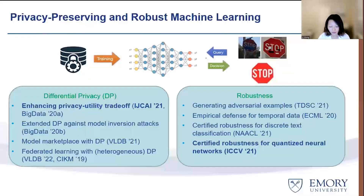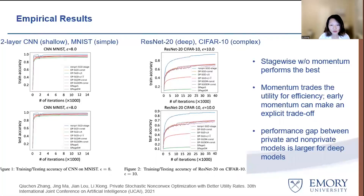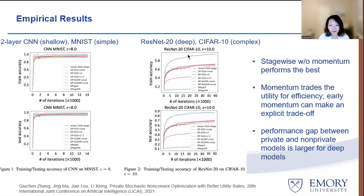Here are some results. The blue line is the non-private model as a reference — the model without any differential privacy guarantee. The few lines next to it are different variants of our approach. The red and green lines are the basic DP-SGD approaches with constant learning rate. We can see the stage-wise algorithm provides a big performance gain compared to the standard baseline DP-SGD approaches. On the other hand, there is still a big gap between the DP algorithms and the non-DP blue line, which means there is still a lot of space for research to improve the utility of differentially private deep learning algorithms.